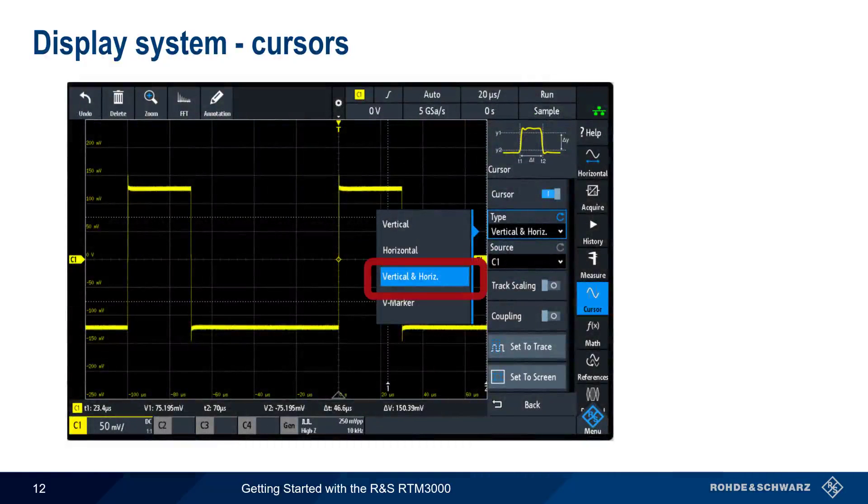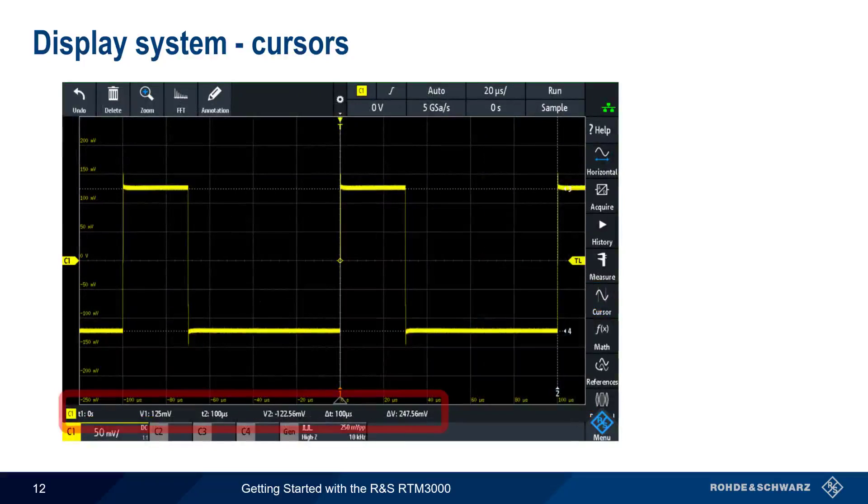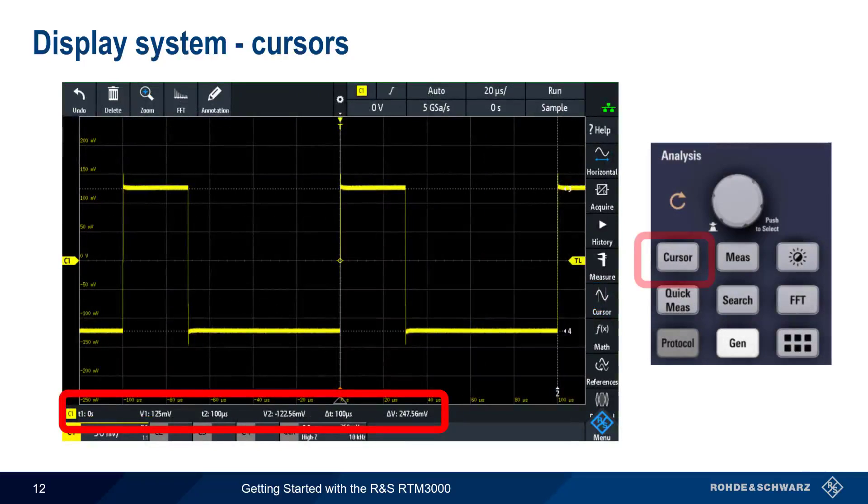Using cursors is a significant improvement compared to counting divisions. By using two sets of cursors, vertical and horizontal, we can get results much more quickly and more precisely. We enable cursors using the cursor button and adjust them using the cursor knob, pushing the button in to toggle between cursors.